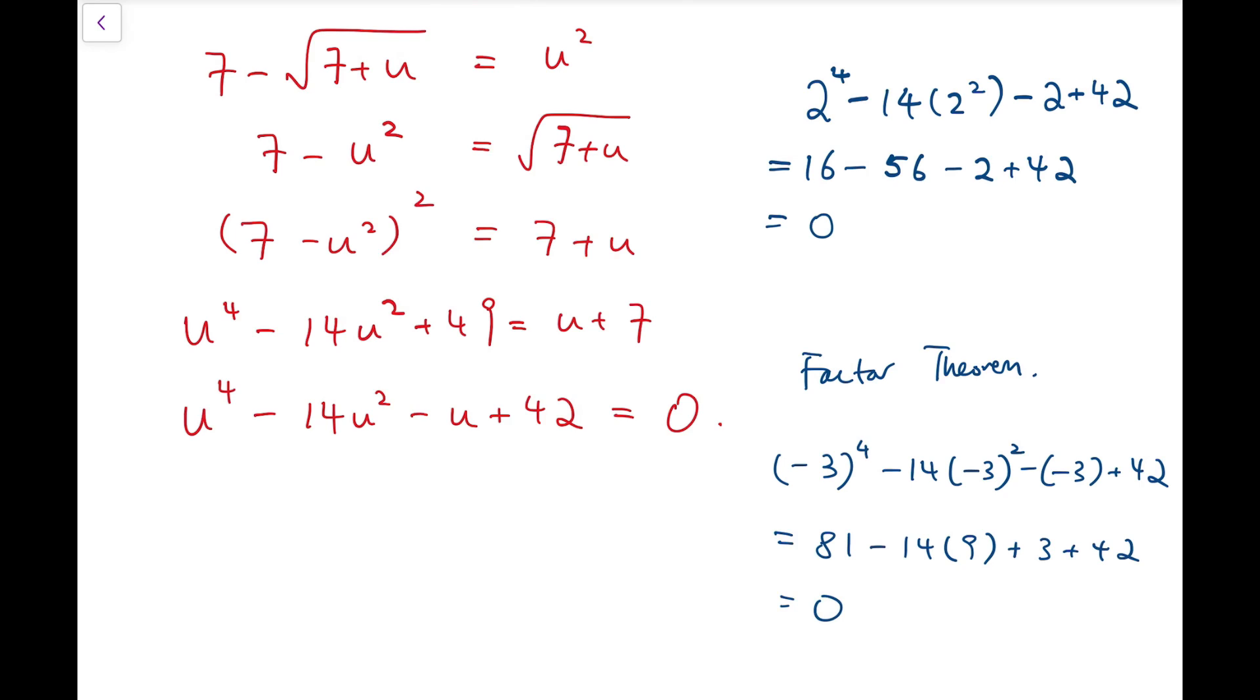So, that means we'll have two linear factors, which is u minus 2 times u plus 3. And then we'll have a quadratic at the end. Now, it remains to see what quadratic we're going to get.